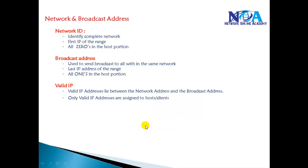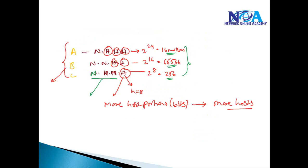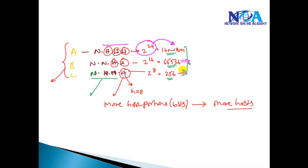Getting back to basics from previous sessions: in a Class A address, there is one network portion and three host portions, giving you 2 to the power of 24 — around 16 million addresses in one network. In Class C you get 256 addresses, and in Class B you get 65,536 addresses per network. The more host bits you have, the more hosts you can connect.